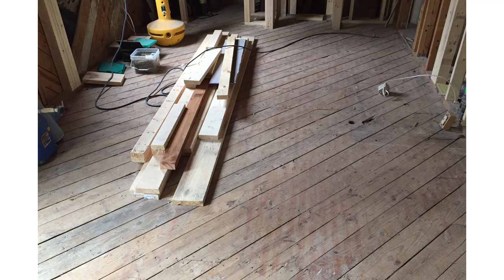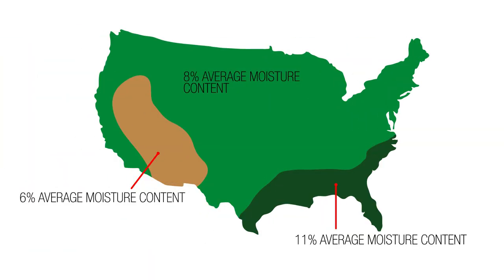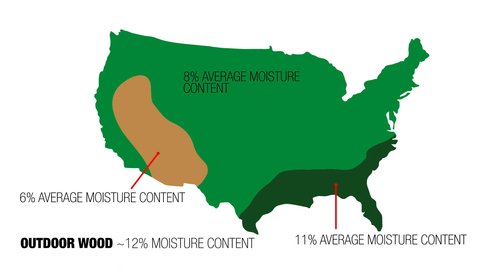At the site, the lumber is allowed to further acclimatize until it reaches an equilibrium moisture content, closer to the moisture content of the environment in which the wood is going to be built. For outdoor wood, that's approximately 12 percent, and drier for some climates. For interior wood, that's about 8 percent moisture content.